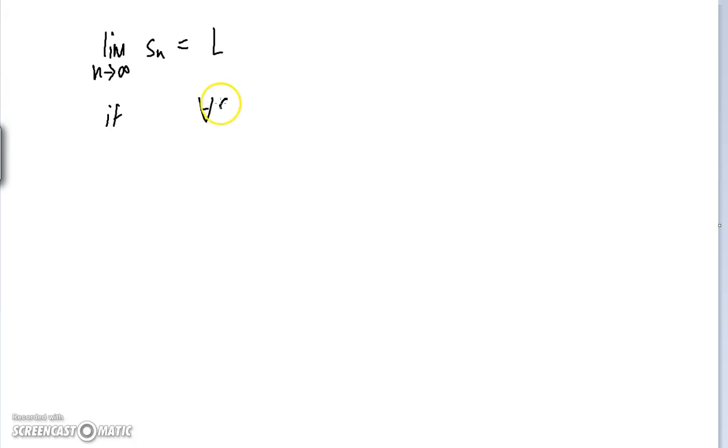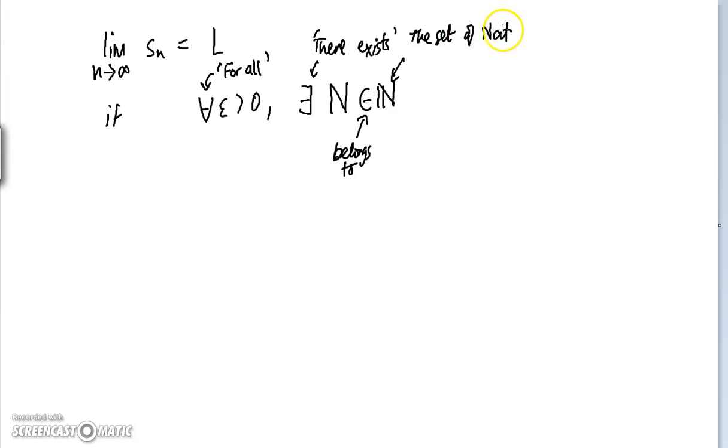So, we say the limit as N approaches infinity of a sequence N is equal to the real number L if for all positive numbers greater than 0, for all epsilon greater than 0, this quantifier here just stands for for all. So, you can read it as for all. For all epsilon greater than 0, there exists, this quantifier stands for there exists, there exists a natural number, big N. This means belongs to, and this denotes the set of natural numbers.